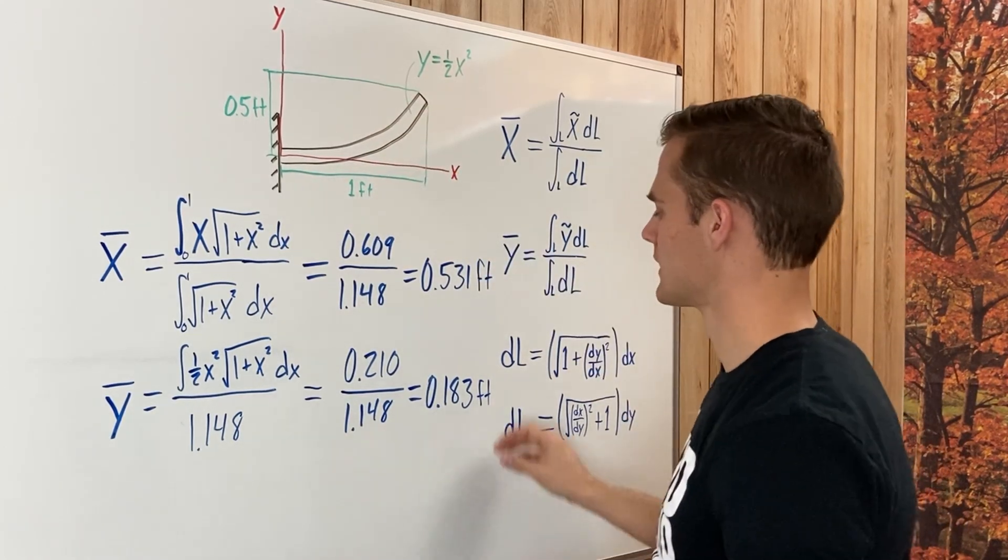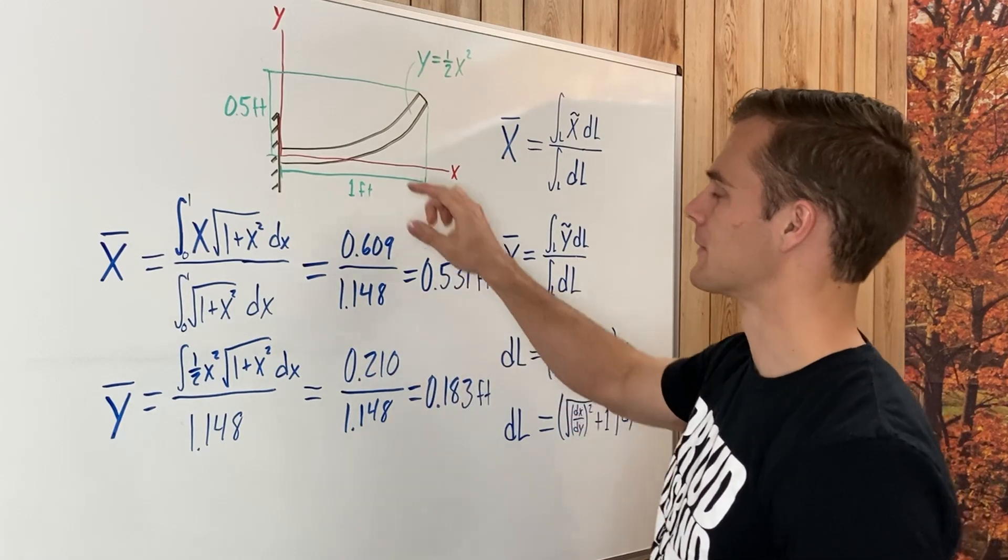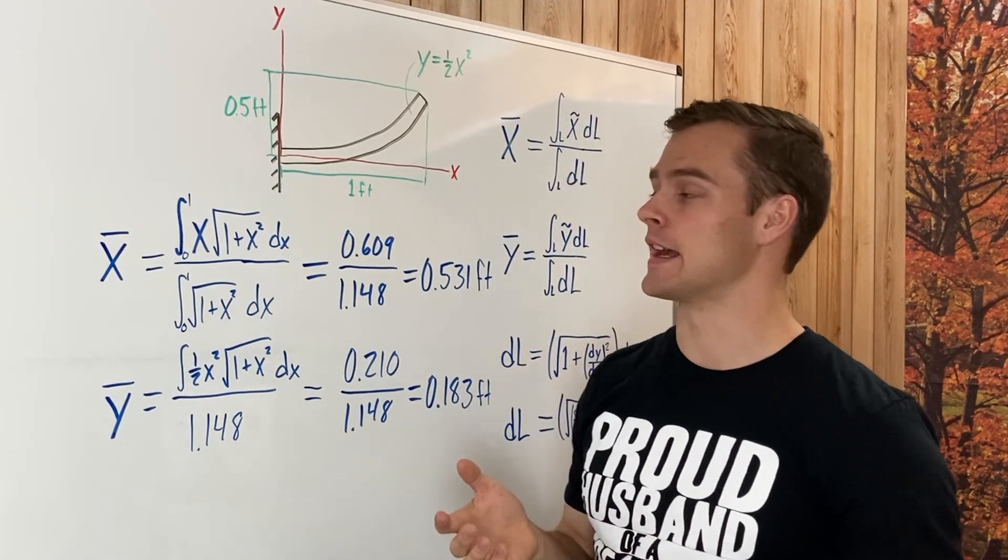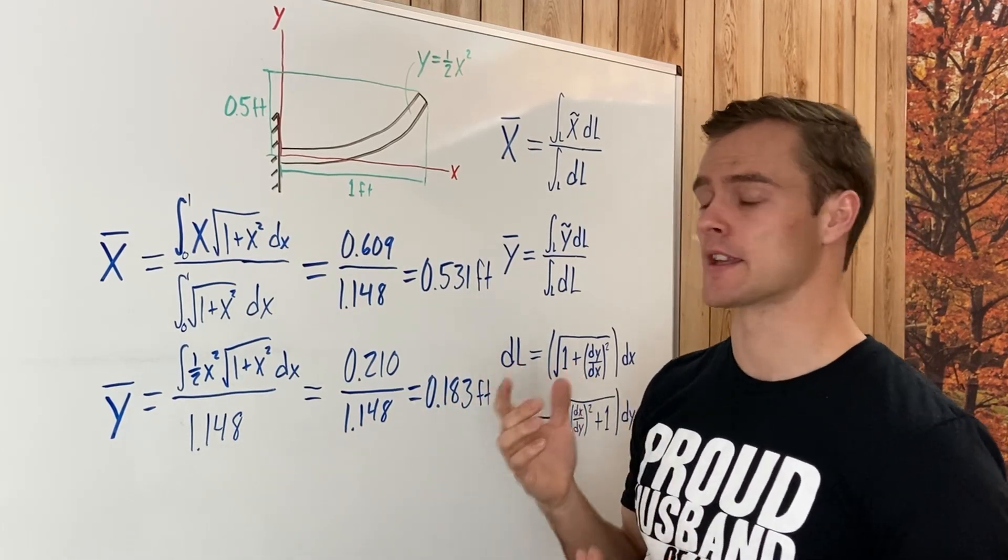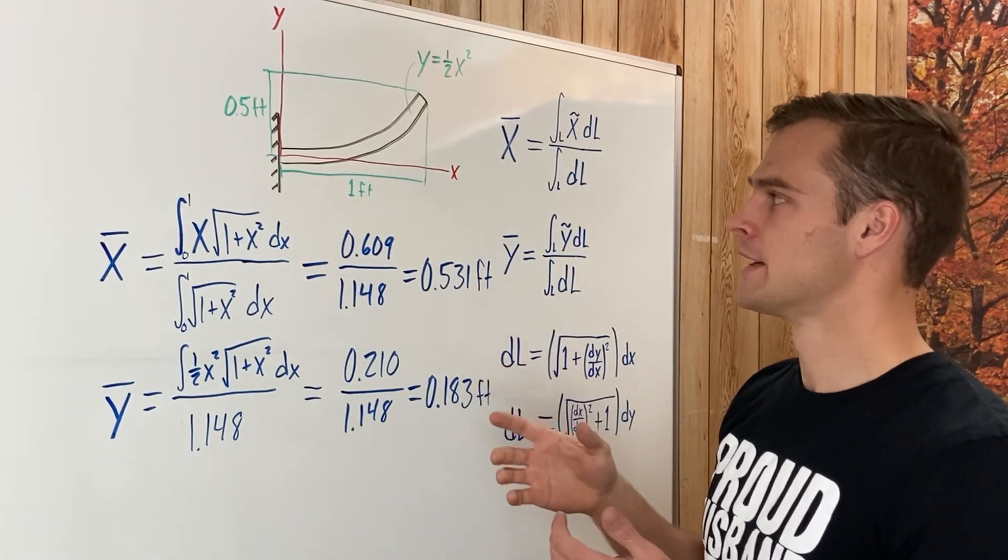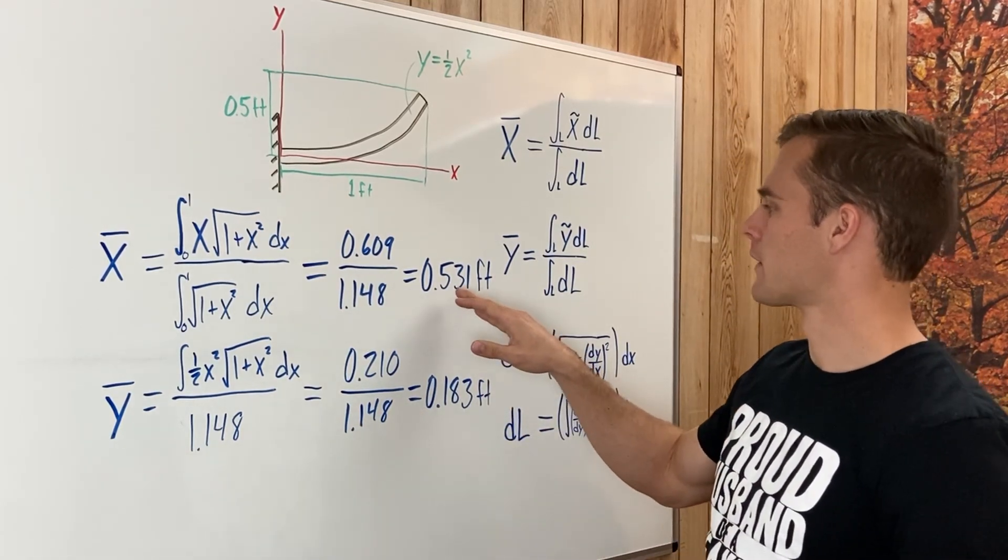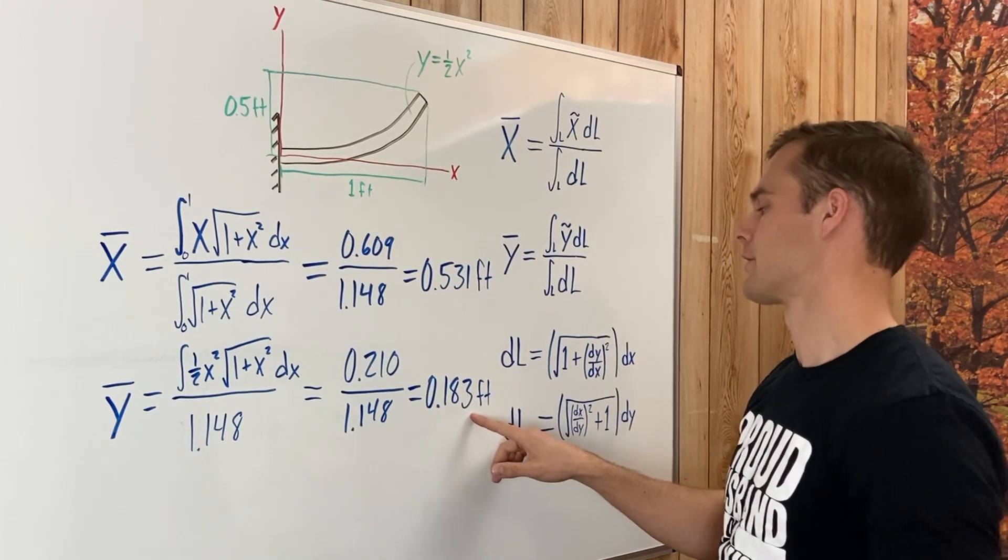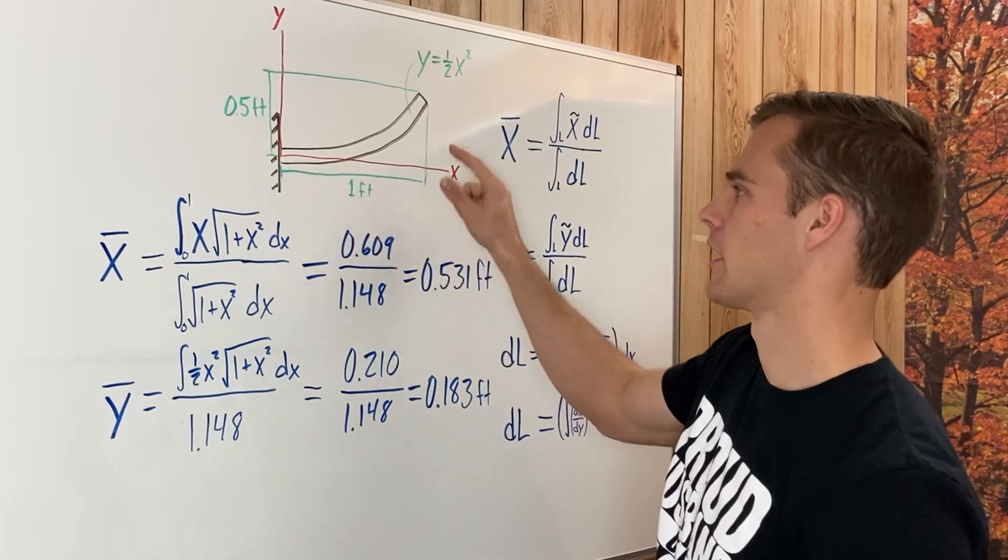So, what you might notice is that this coordinate, this x-y coordinate here, is probably not going to land on this rod. It's probably going to be off this rod. And that's going to be the case for almost all of your rods and wires and line segments that you find the center of gravity of. And that's because, well, it's just because it just doesn't end up happening very often. Because if you were to plug in 0.531 into x here, you probably would not get 0.183 for y on this side in your equation. So, that would tell you that it's not going to be on your rod.